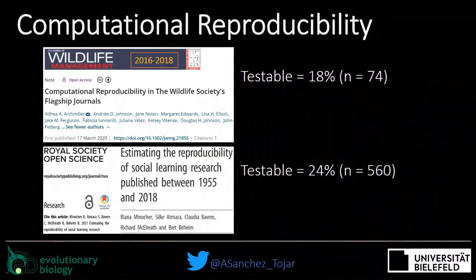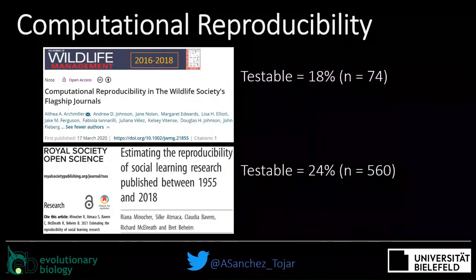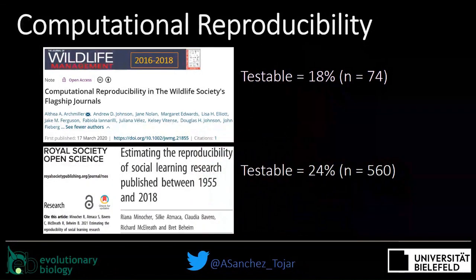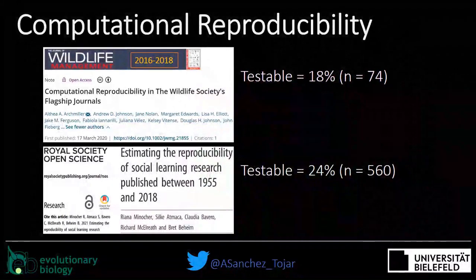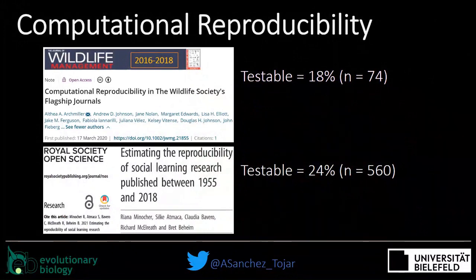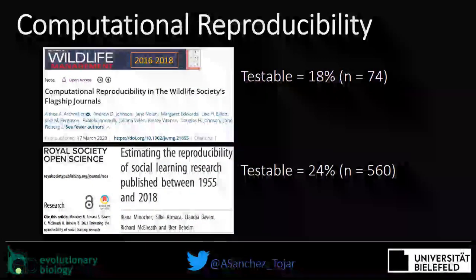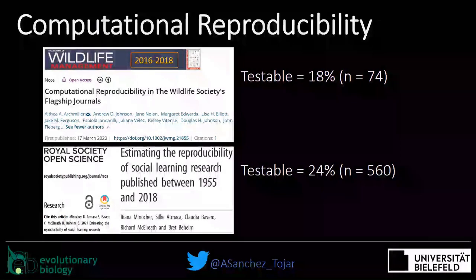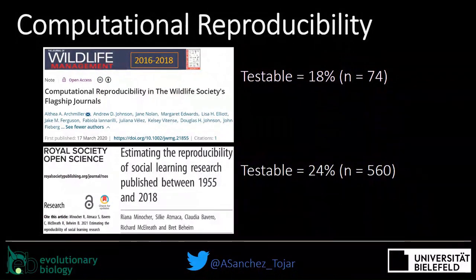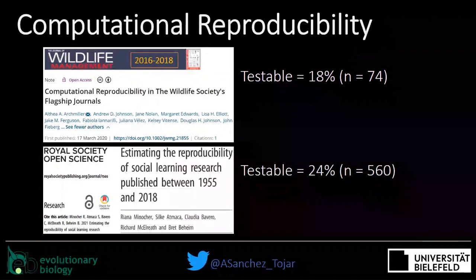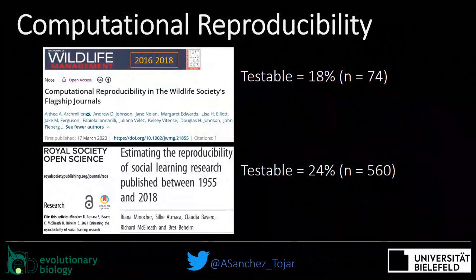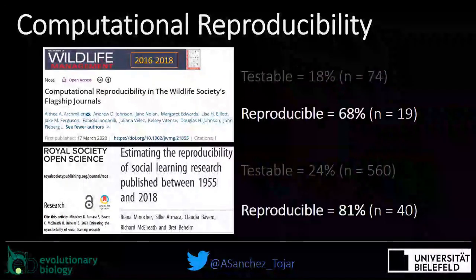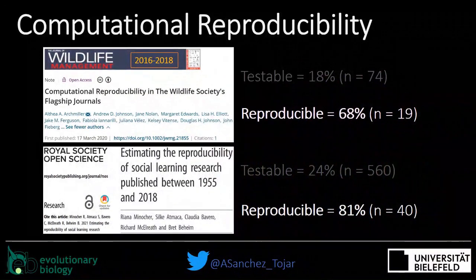You can also study computational reproducibility, and the first step is to see how many studies you can test — normally associated with whether data is available online. The truth is that most studies are not testable for computational reproducibility, and when we can test it, reproducibility is not as close to 100 percent as we would expect or like it to be.